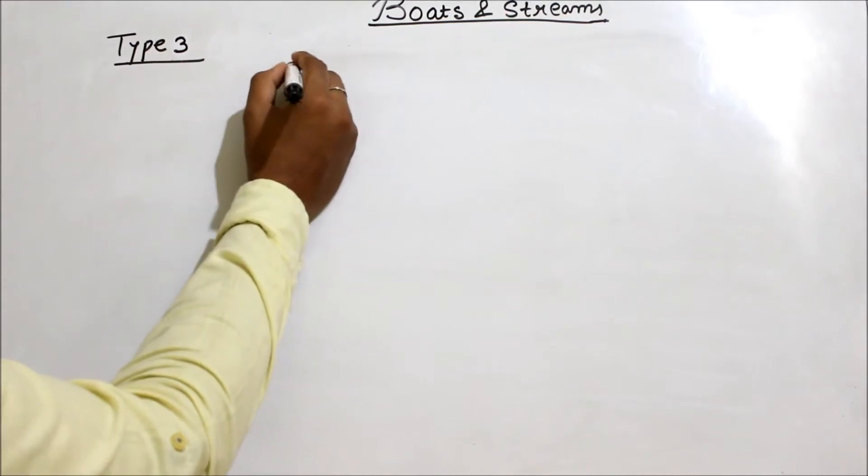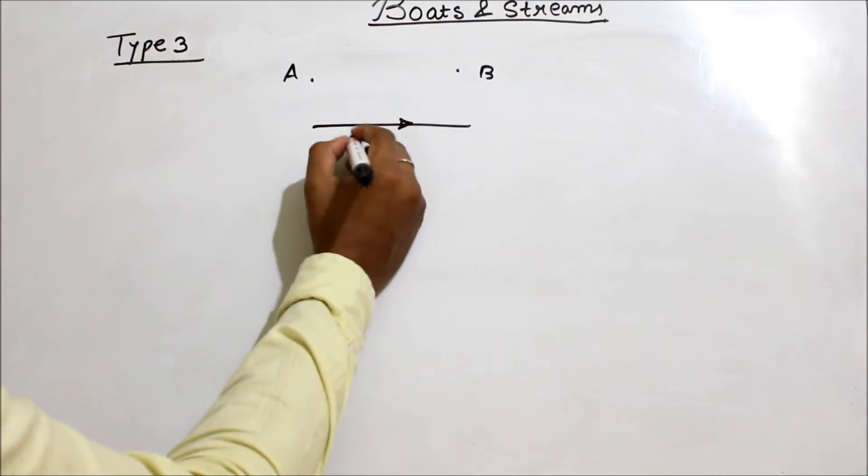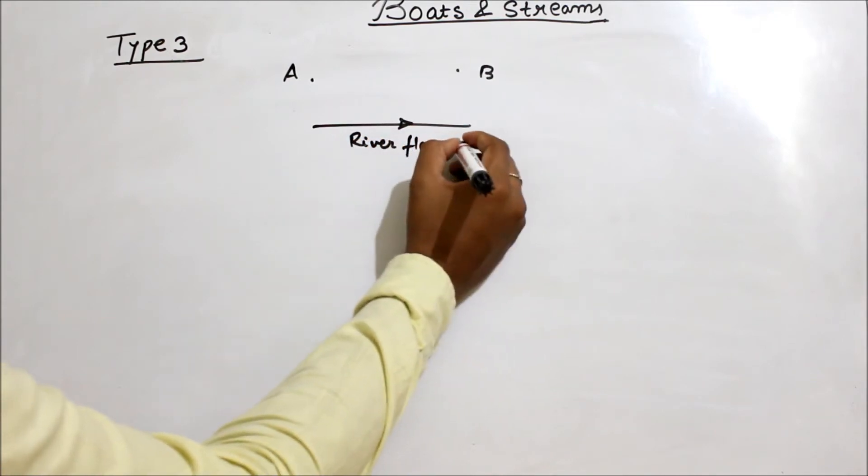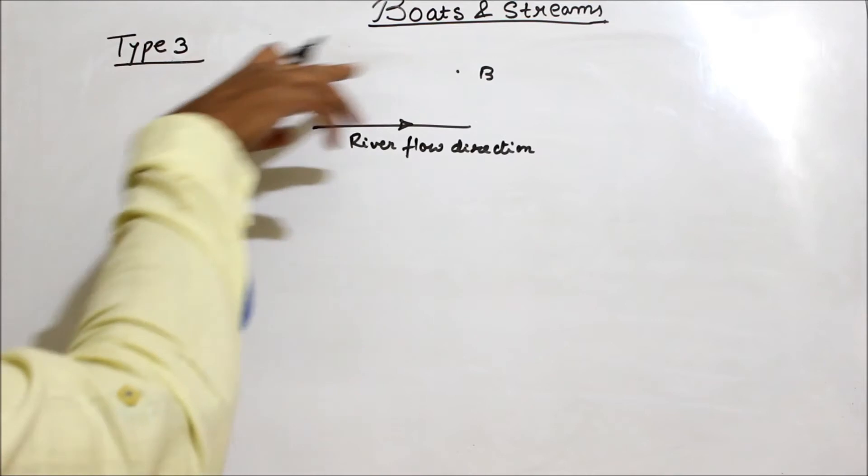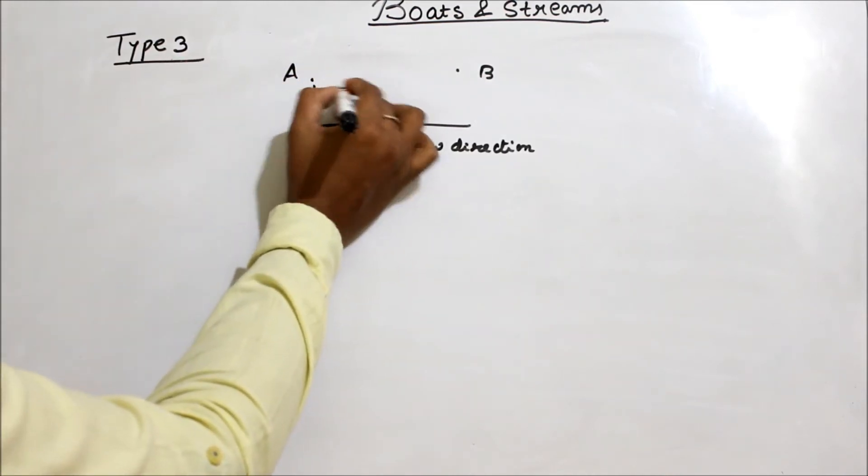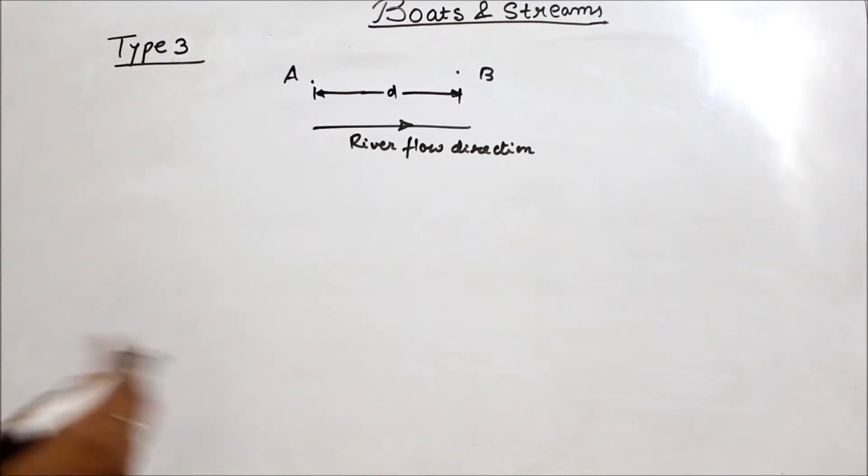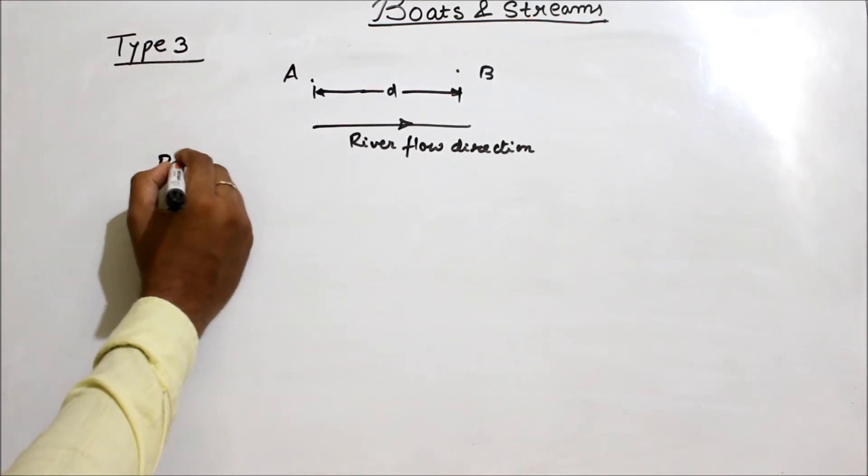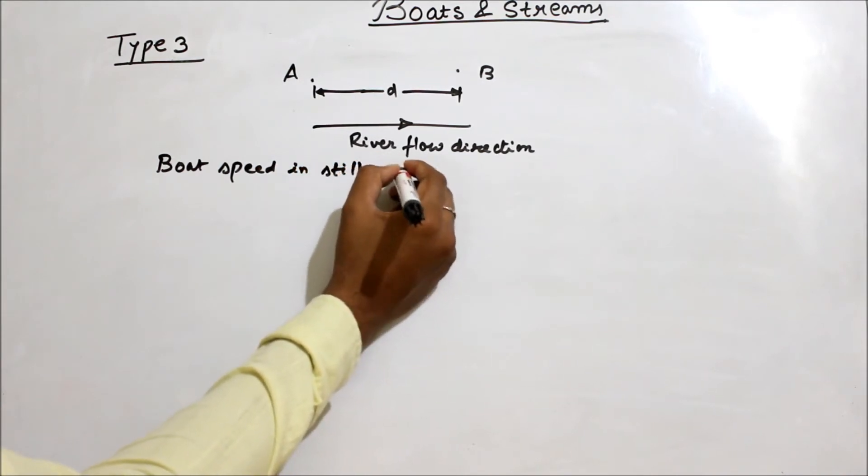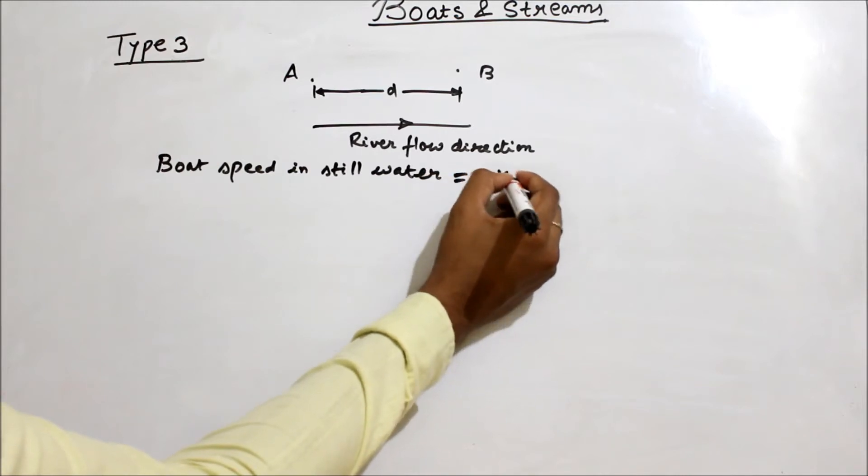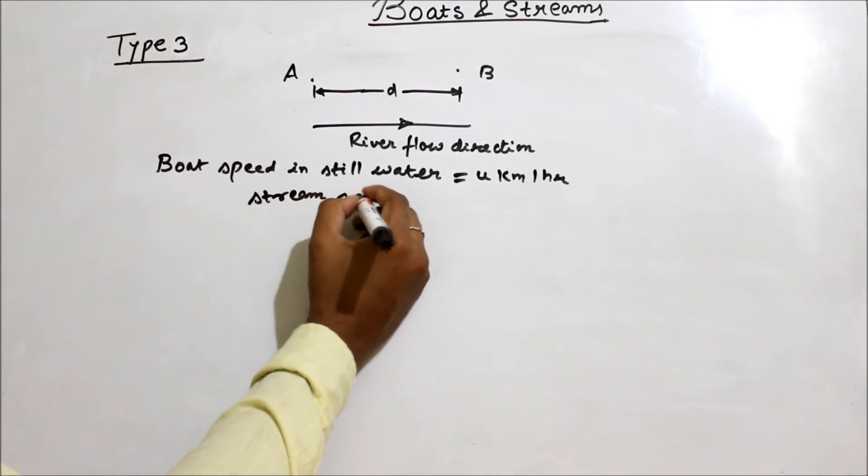Let's see. One point is A and this point is B. Let's say the river is flowing in this direction - river flow direction. What does this mean? This is downstream direction. If I go from A to B, that means going downstream. Suppose here the distance is d. So what is the speed of man in still water? Or the speed of boat?